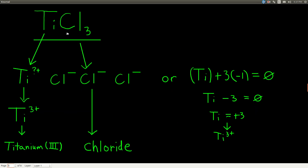Let's name this compound. Ti stands for titanium and this is chloride. Titanium is a metal and chlorine is a non-metal, so we know it's a binary ionic compound. Does titanium need a Roman numeral? It's not on the list of metals that only form one charge, so yes, we need a Roman numeral. Chloride has a negative one charge. Because we have three chloride ions, we have three negative charges total, and since there's only one titanium atom, it must bear all three positive charges — so titanium has a plus three charge. The compound is called titanium(III) chloride.